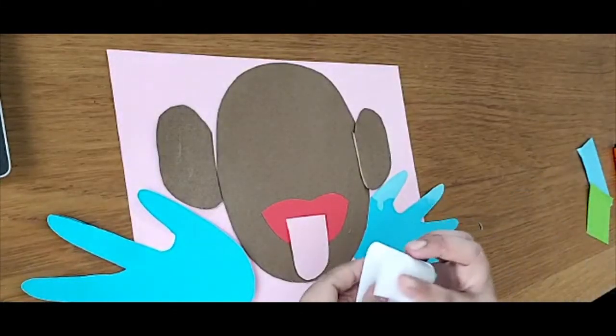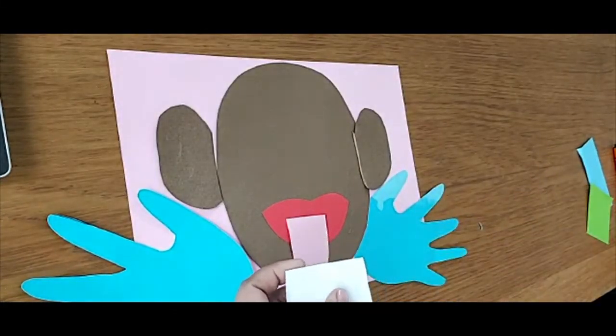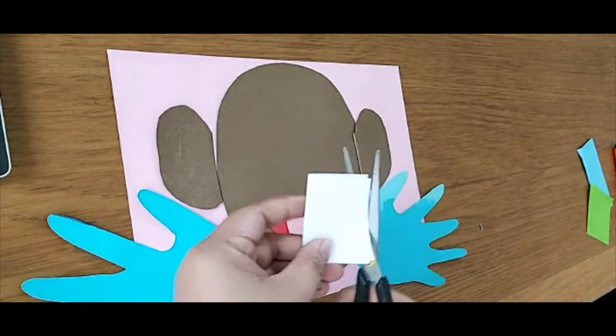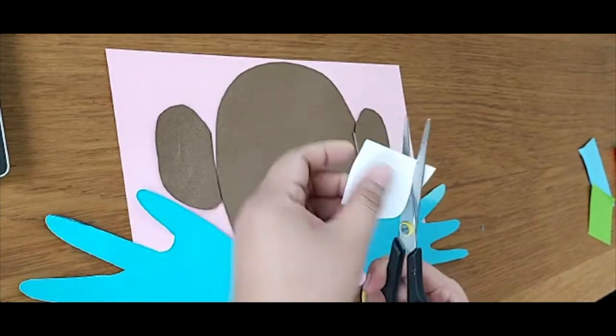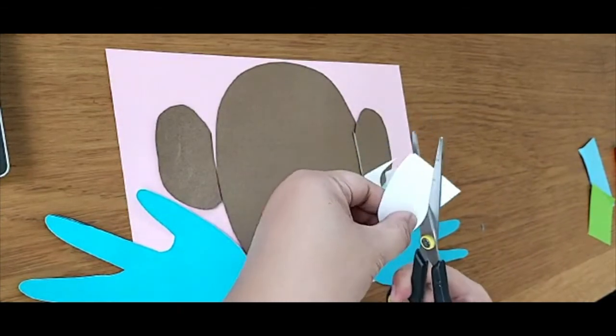Now we're going to do the eyes. Just get white paper and cut it into circular shapes.